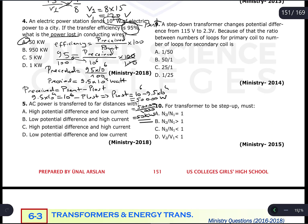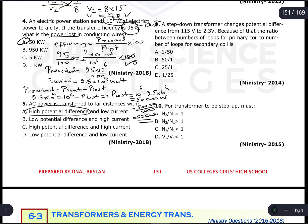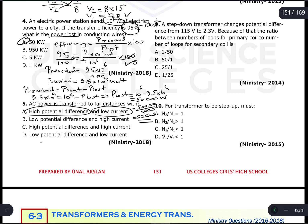Question 5: AC power is transferred over long distances with high potential difference and low current. High potential difference produces low current, and because power loss equals I² × R, low current makes power loss minimum. Therefore, the secondary coil of the transmission transformer has high potential difference and low electric current. The answer is A.